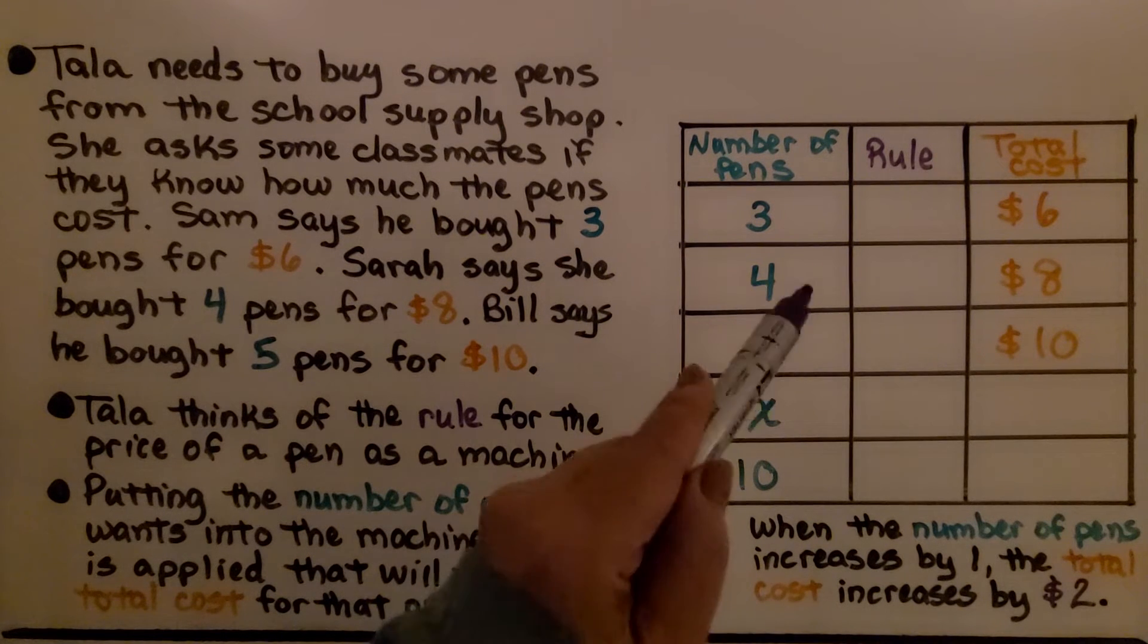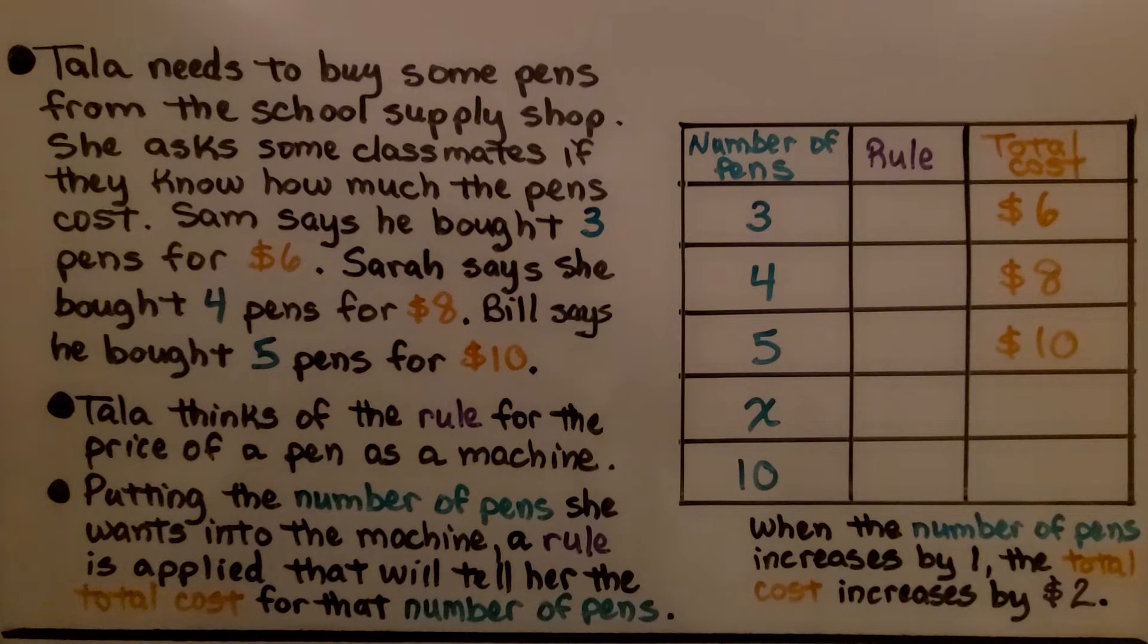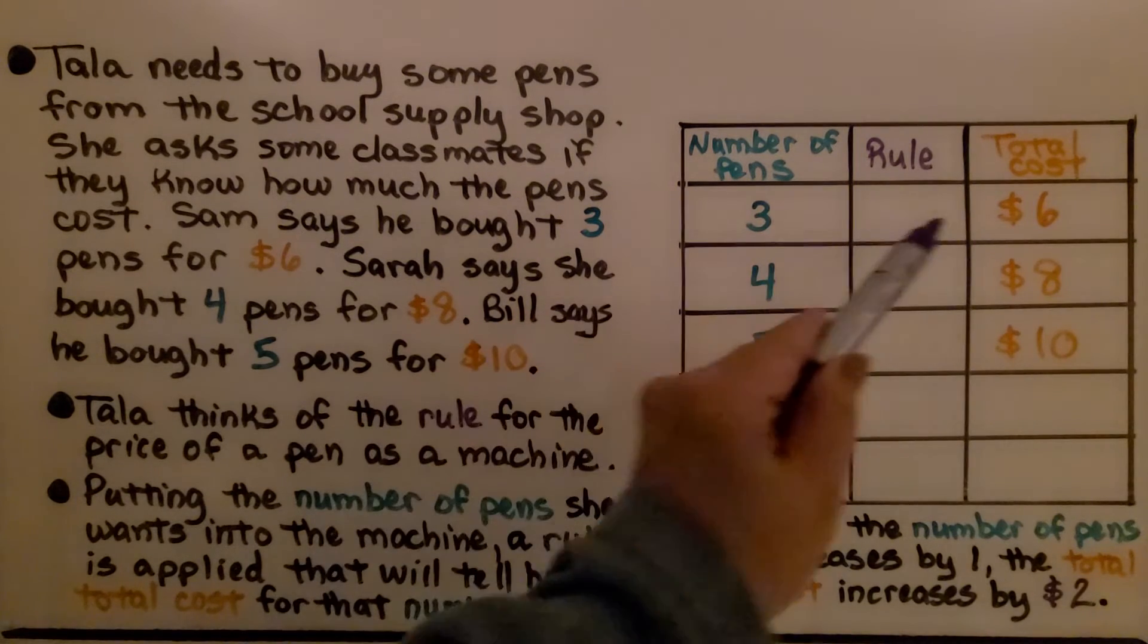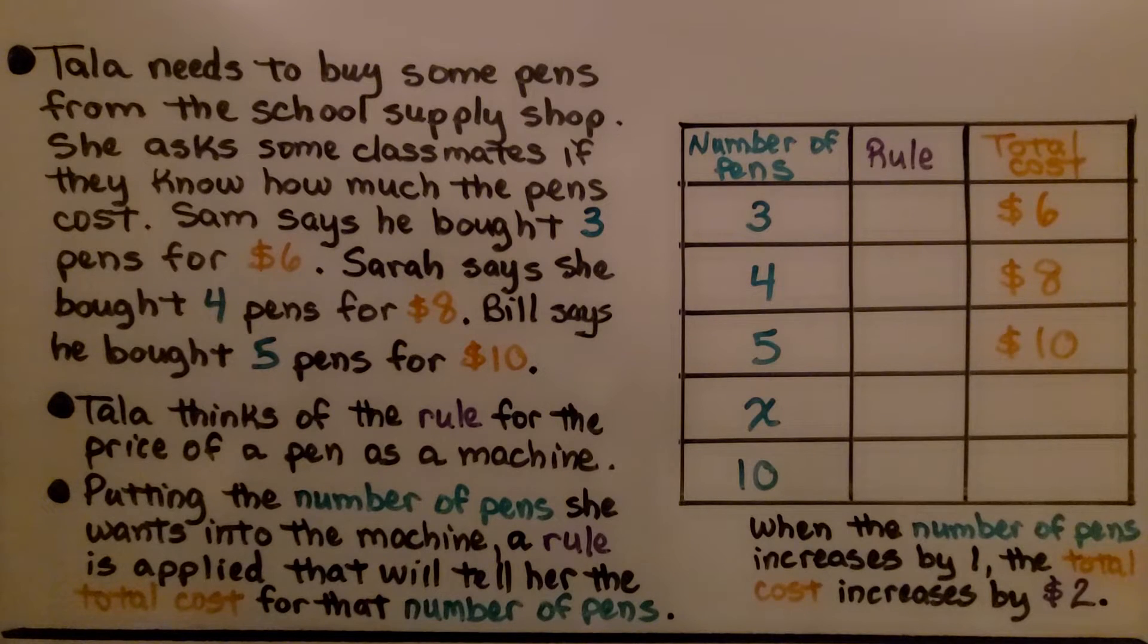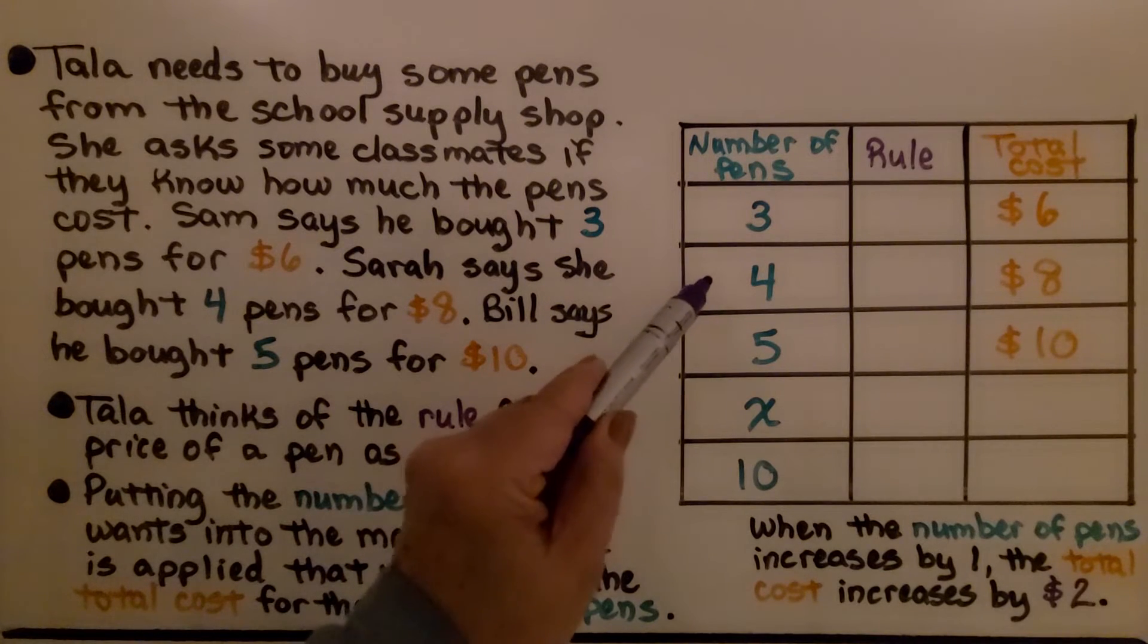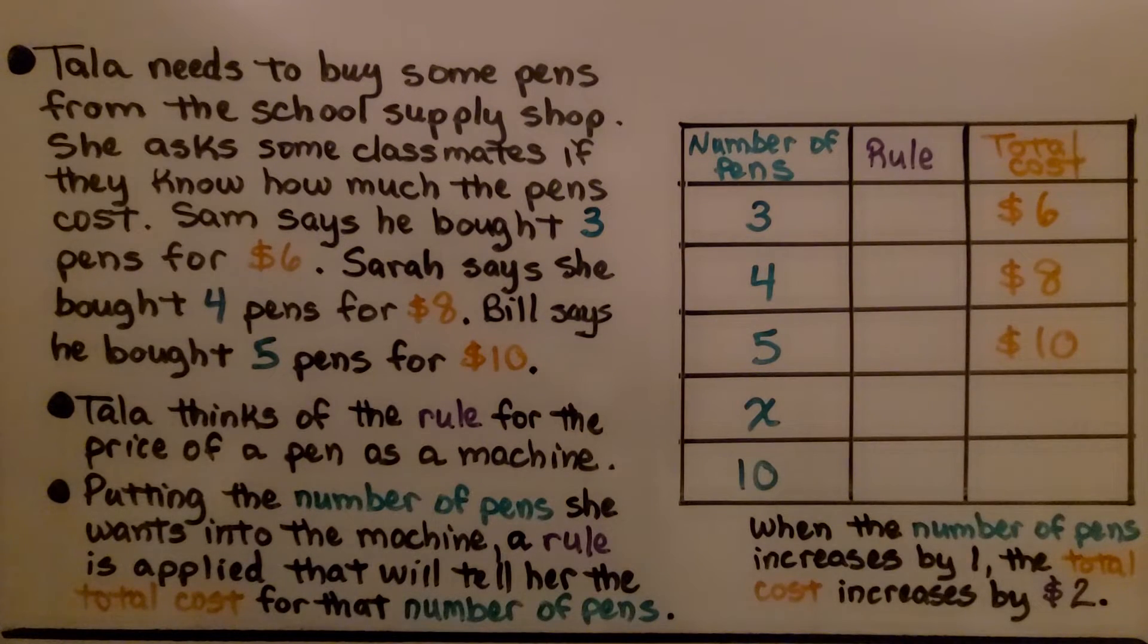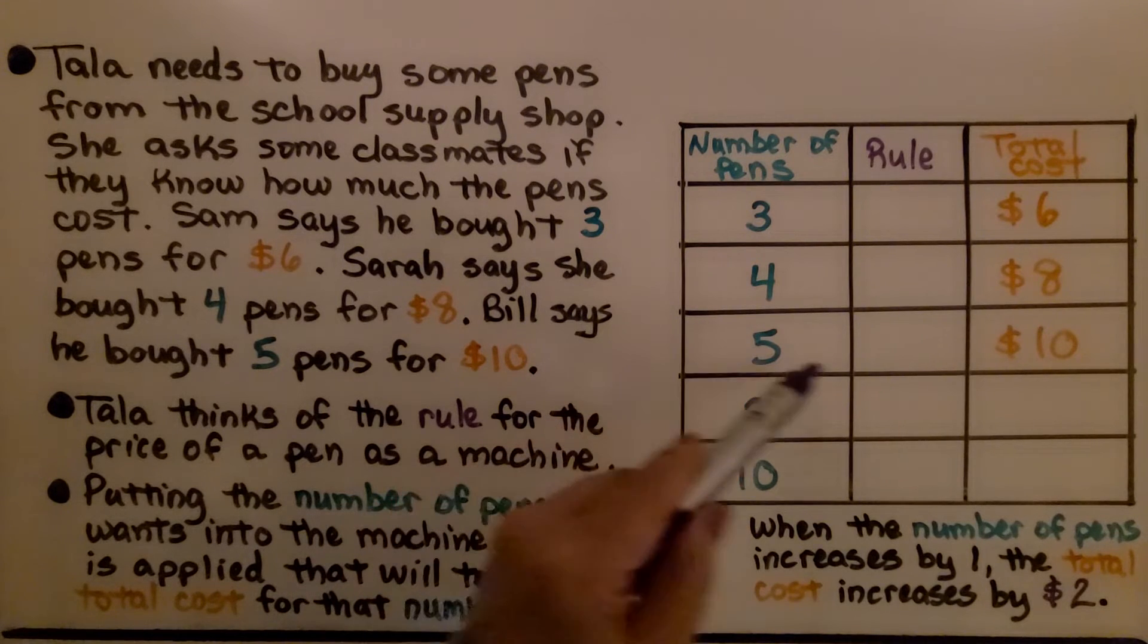Now here we have an unfinished table. Tala needs to buy some pens from the school supply shop. She asks some classmates if they know how much the pens cost. Sam says he bought 3 pens for $6. And Sarah says she bought 4 pens for $8. And Bill said he bought 5 pens for $10.